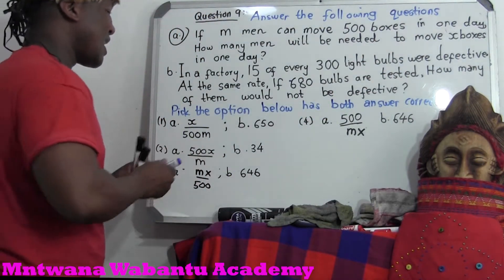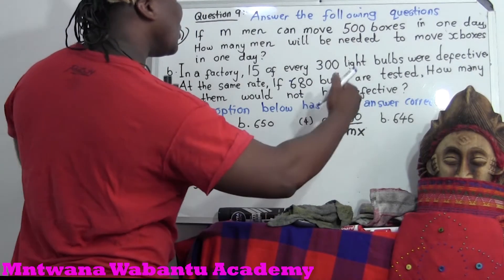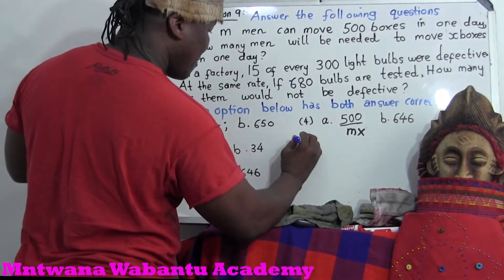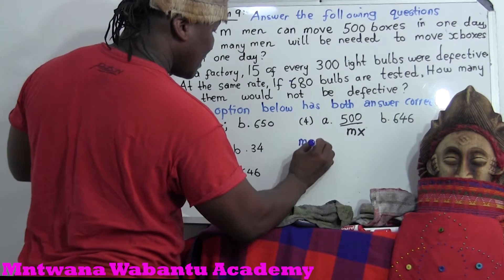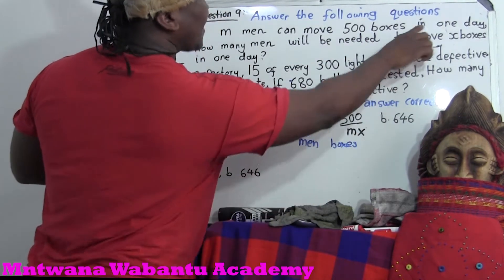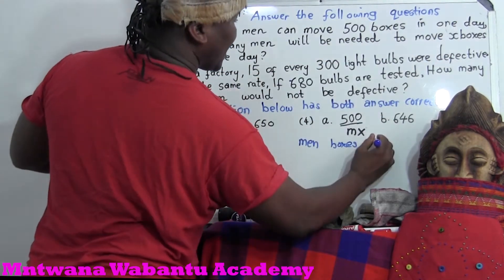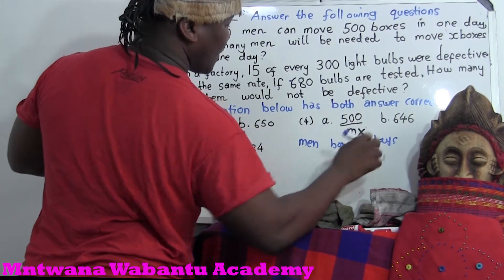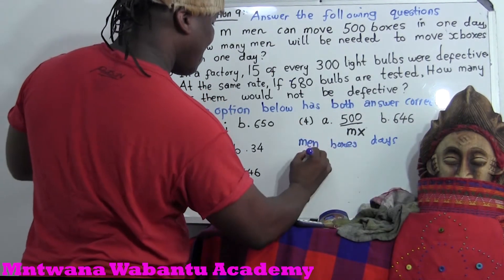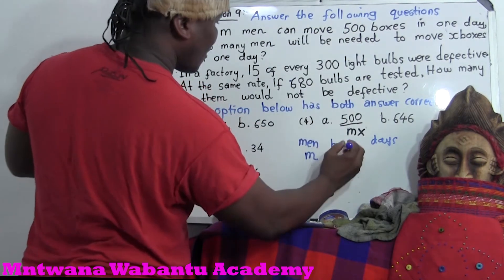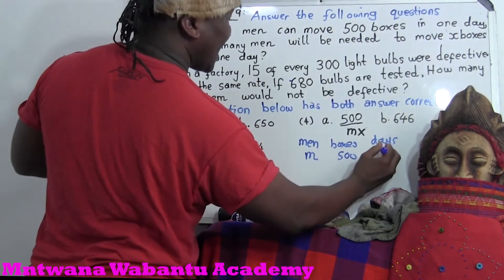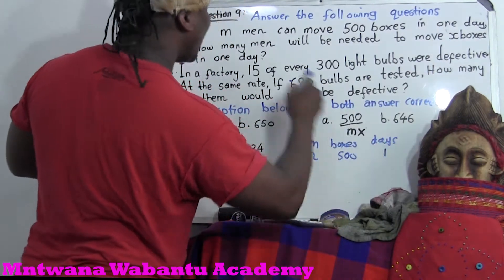So this question is very easy guys, it's like a primary school question. What you do is list the numbers. Men — there's men. And boxes. And the last one is number of days. That is the question. M men — men are M. How many boxes? 500 boxes. In one day. How many number of days? One day.